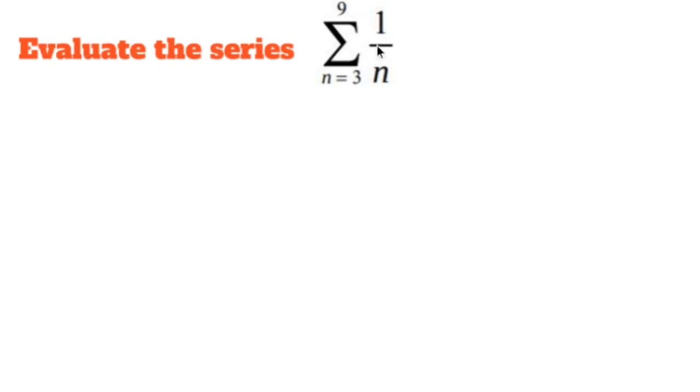Evaluate the series 1 over n where we start at 3 and end at 9. So we have our sigma notation right there. This says plug in 3, then plug in 4, then plug in 5, then add up all of those and keep going until you hit 9.